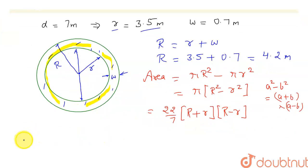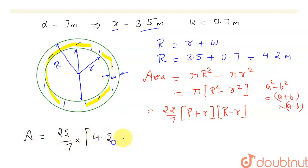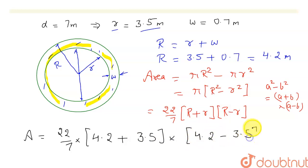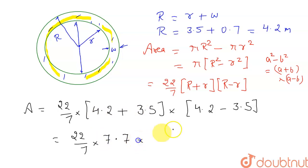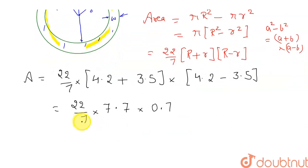So the area A equals 22/7 multiplied by (R + r) multiplied by (R − r). Substituting R = 4.2 and r = 3.5: R + r = 7.7 and R − r = 0.7. So we get 22/7 × 7.7 × 0.7.